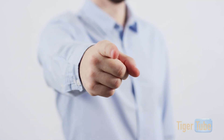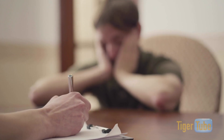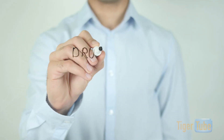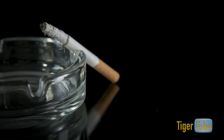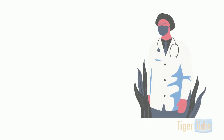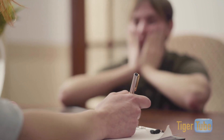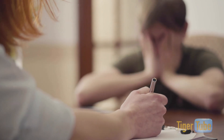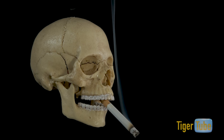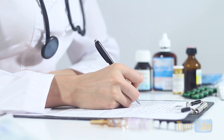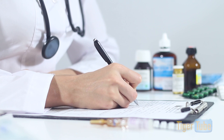Hey you, this is a reminder to not do drugs. Drugs are harmful, even more so to teenagers. Drugs are not the answer. Here are the dangers of using substance drugs. According to the CDC, the main effects that drugs have on teens are abnormal growth, development to the brain, heart disease, high blood pressure, sleep disorders, violent behavior, and depression. Teens who abuse drugs are at a particular risk for negative consequences. Don't waste your life wasted.